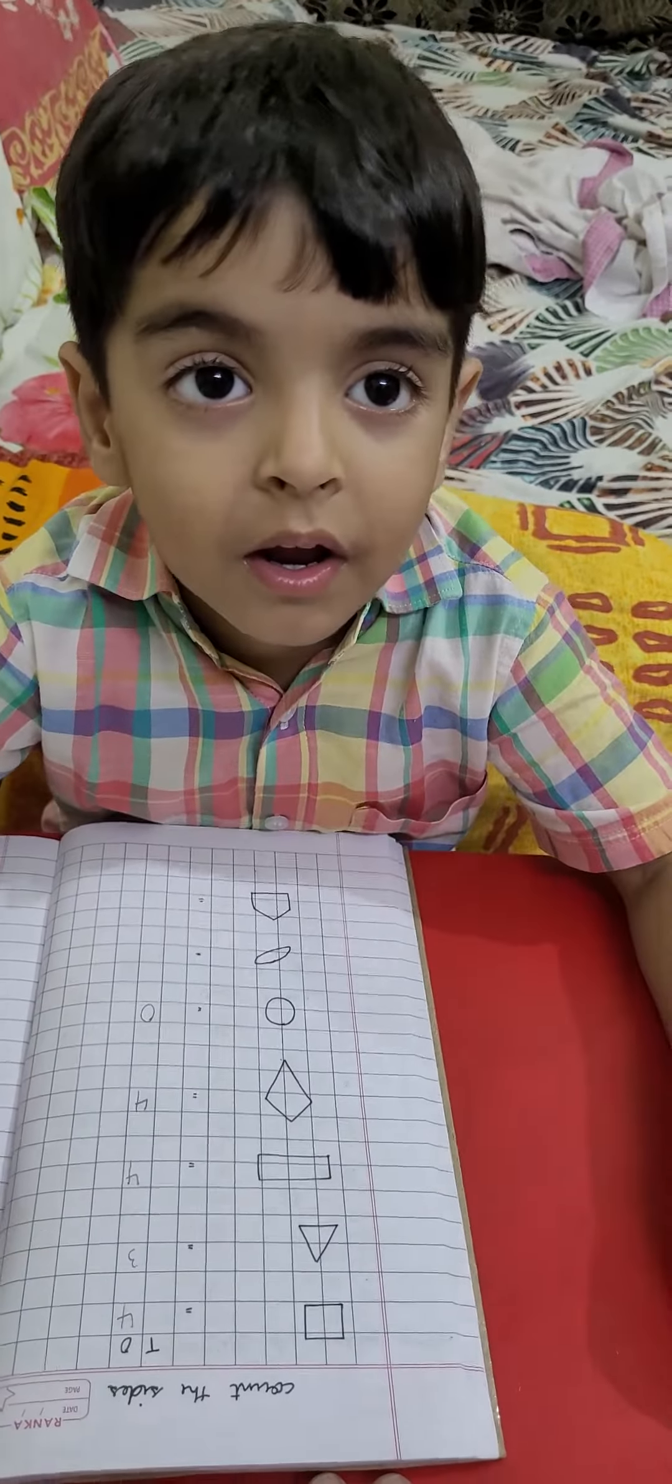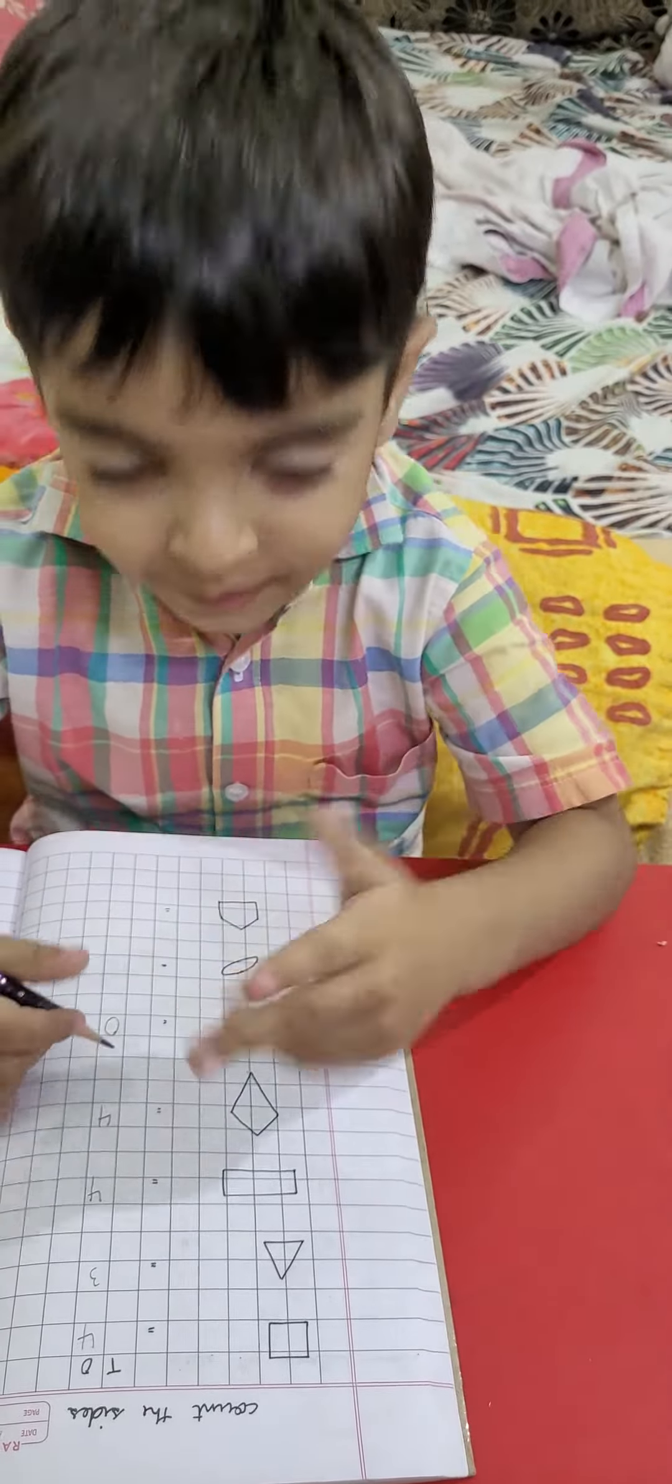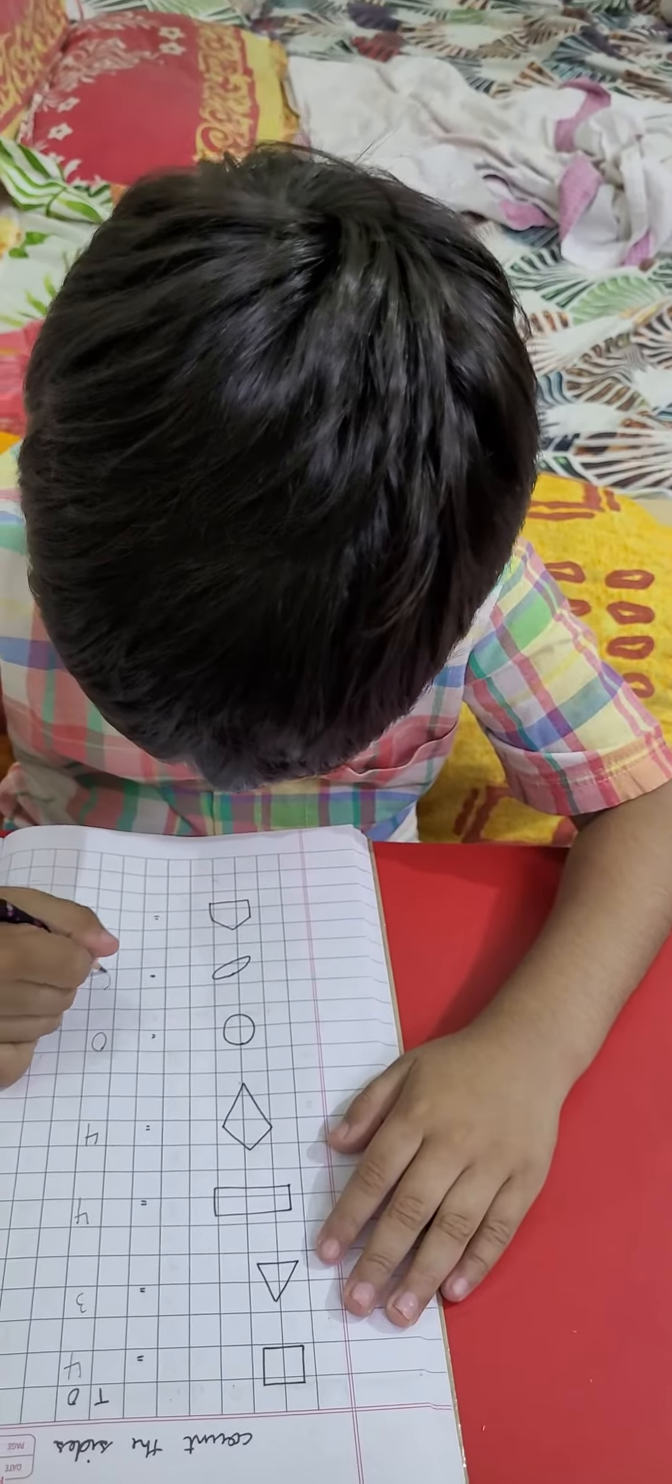How many sides are there? No side. Then what do you have to write? Zero. Where do you have to write? Okay.